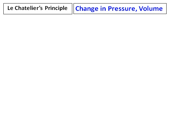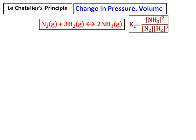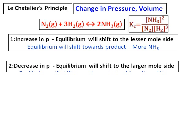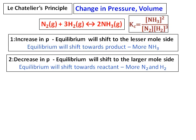Now let's see how change in pressure and volume affects the equilibrium, considering the same reaction: nitrogen and hydrogen giving ammonia. If I increase the pressure, the equation doesn't directly show pressure, but from the ideal gas law, pressure is related to the number of moles hitting the wall of a container. So pressure is directly related to the number of moles. If pressure increases, the number of moles is increasing, and the reaction will proceed in the direction where the number of moles is less. Therefore, increase in pressure shifts the equilibrium towards the side with fewer moles.